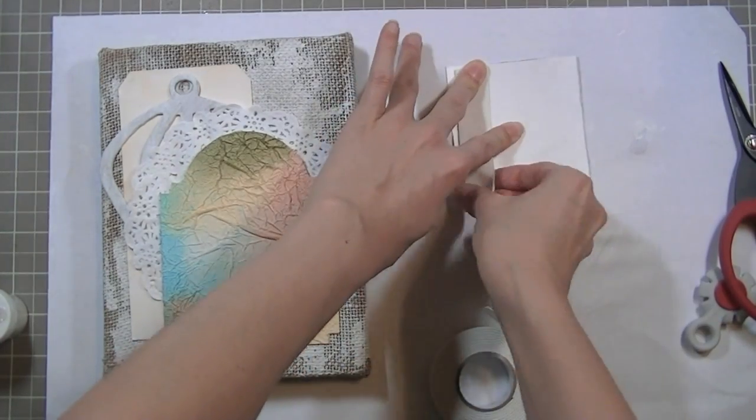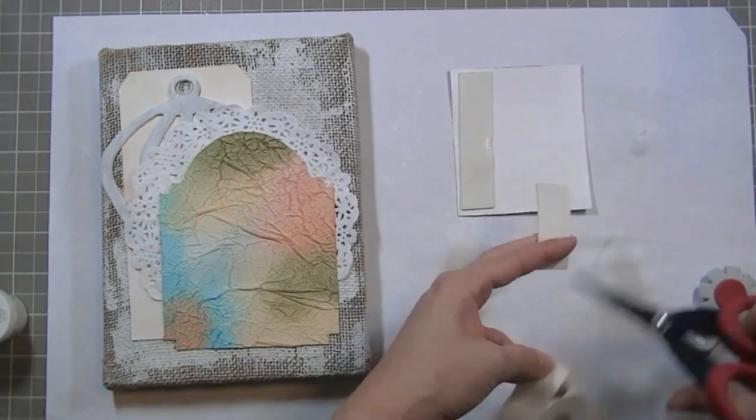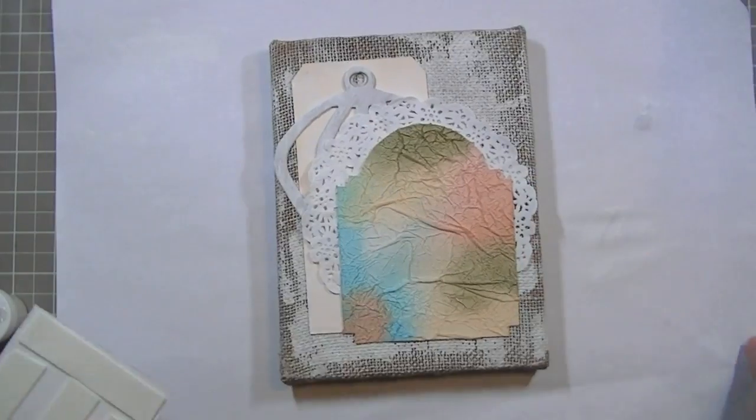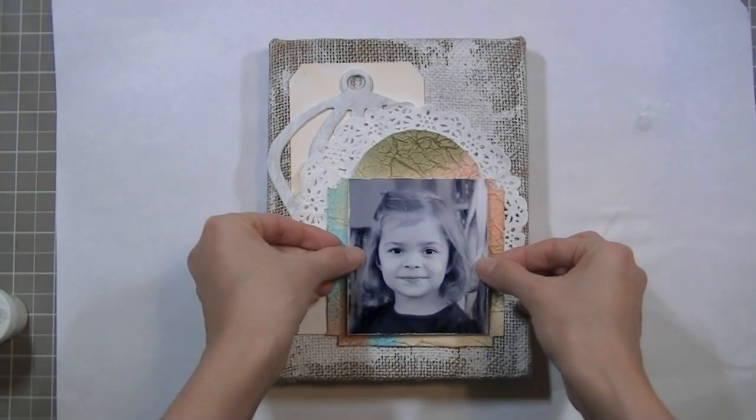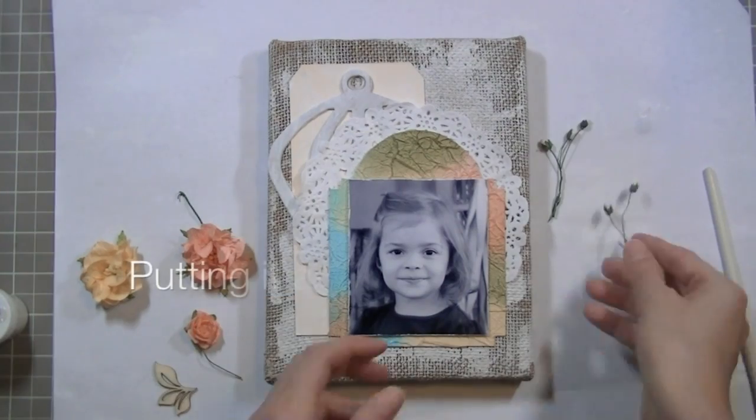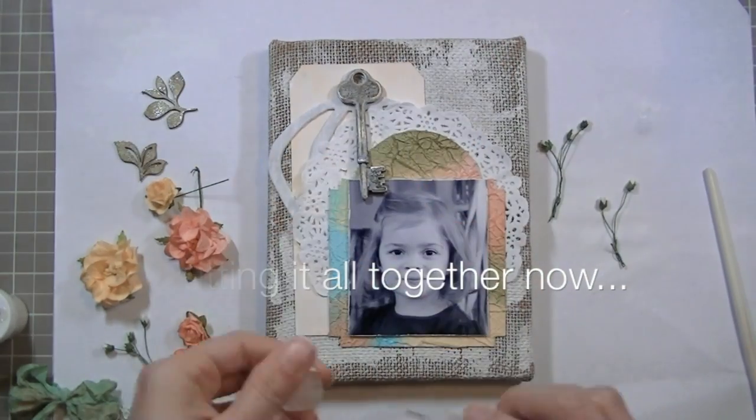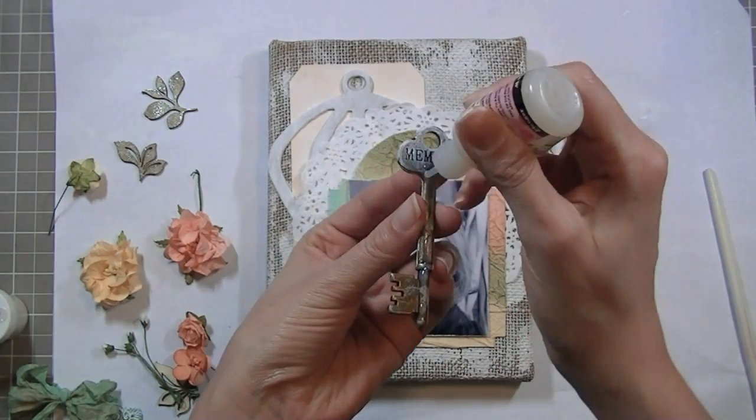I'm taking a picture of my daughter which I've printed in black and white and I grunged it up using the Tim Holtz Distressor all around the edges. And I'm just going to use dimensional adhesive to adhere it to the page and then I'm just going to put everything that I've already altered on the page. I'm just putting it together.